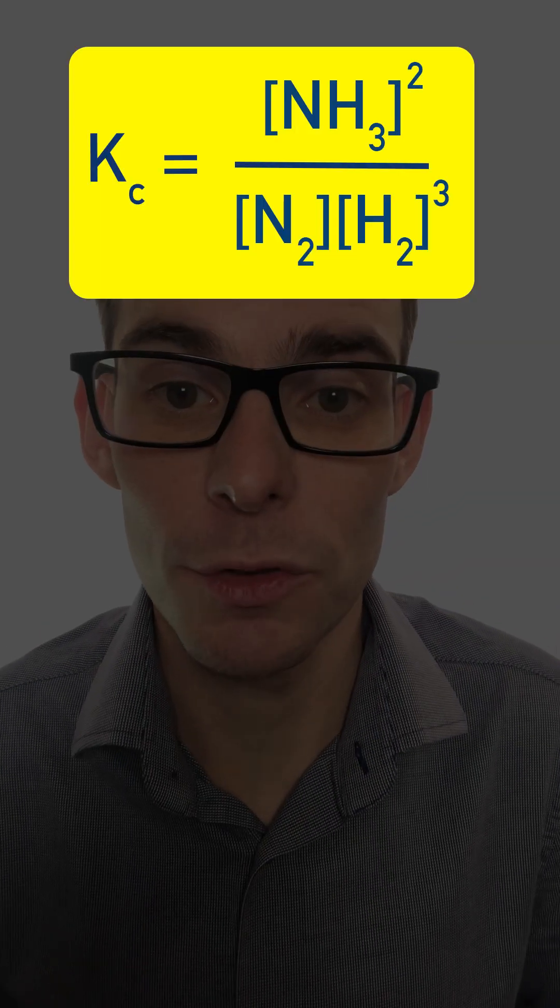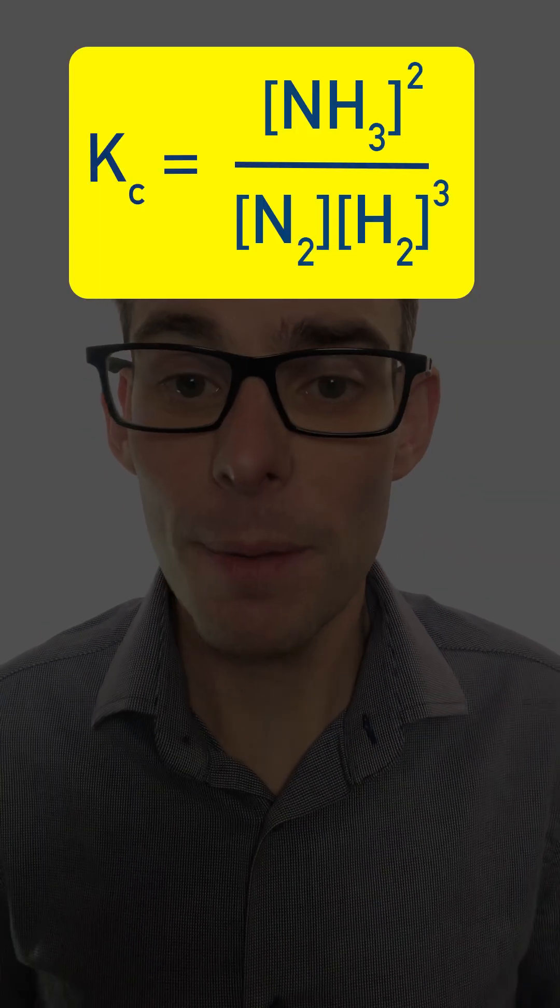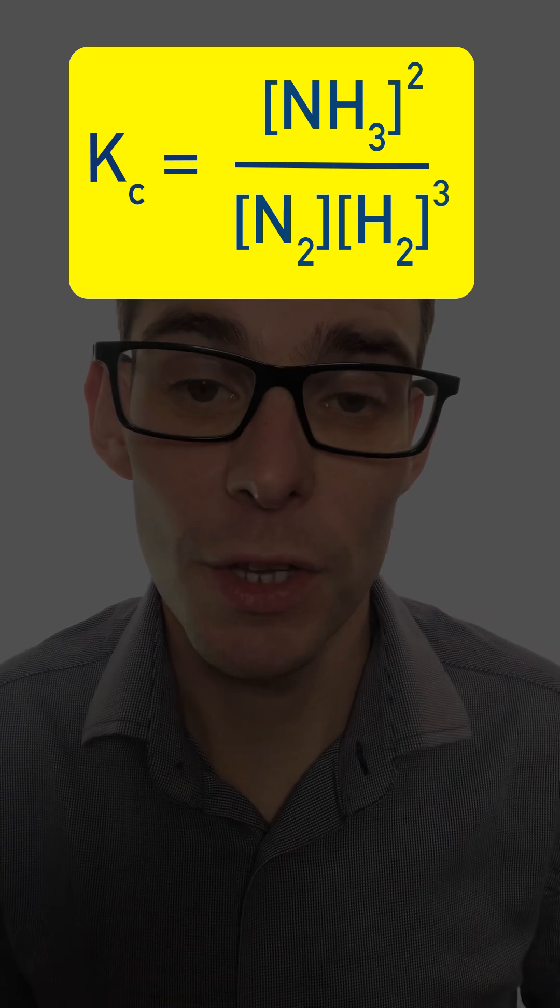So for example, here we've got Kc equals concentration of NH3 squared divided by concentration of N2 times concentration of H2 cubed.